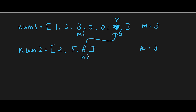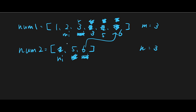Then n_index moves left and right_index moves left. Next, we compare 3 with 5. 5 is greater than 3, so 5 goes to the right position, and both n_index and right_index move left. Next, 3 versus 2: 3 is bigger, so 3 goes to the right position and m_index moves left. Then we compare 2 versus 2 — they are the same, so we put one of them at the right index.